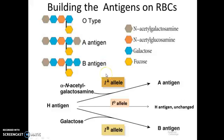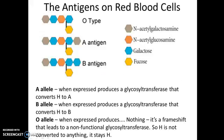What allele you have for the galactosyltransferase dictates what sorts of antigens you can place on your red blood cells. The A allele, when expressed, produces a glycosyltransferase that converts H to A. The B allele produces a glycosyltransferase that converts H to B. The O allele, when expressed, produces a completely non-functional glycosyltransferase — actually a frameshift mutation — so H isn't converted to anything and stays in H form.